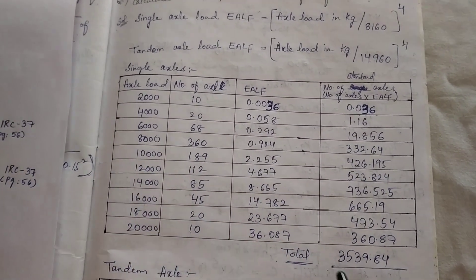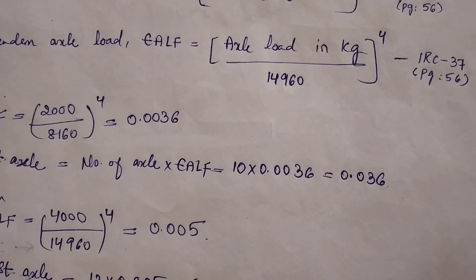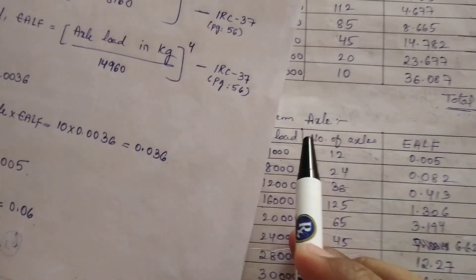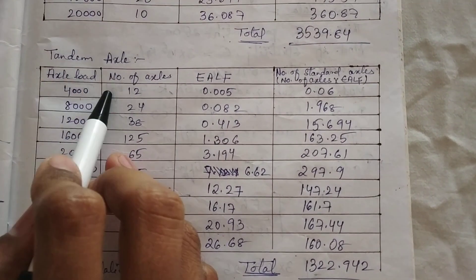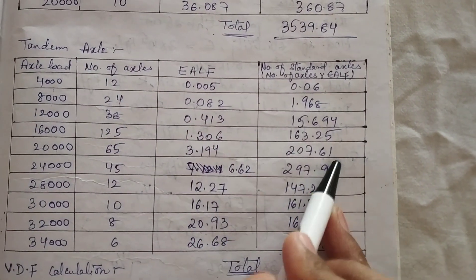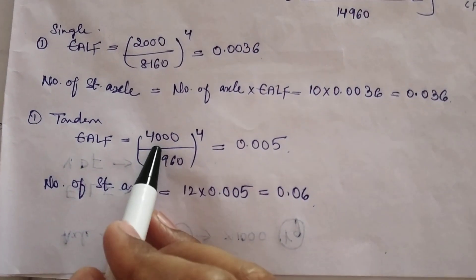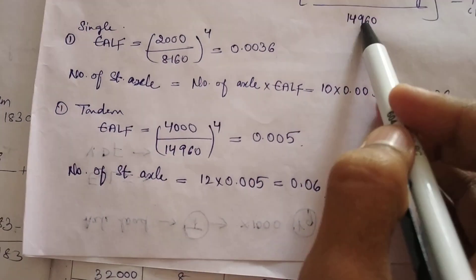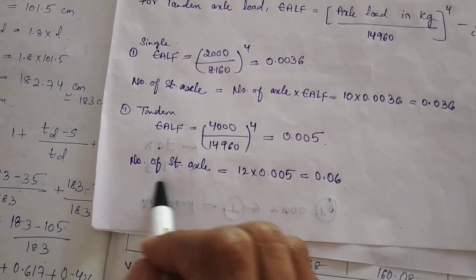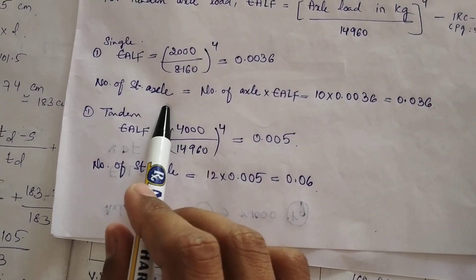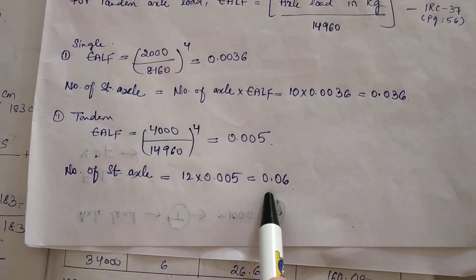For the tandem axle, taking the first sample: the question mentions 4 tons. Converting to kg gives 4000. So EALF = (4000 / 14960) raised to the power 4, giving the calculated value. Next, we find the number of extended axles the same way as for single axle loads — number of axles multiplied by EALF gives the number of standard axles.